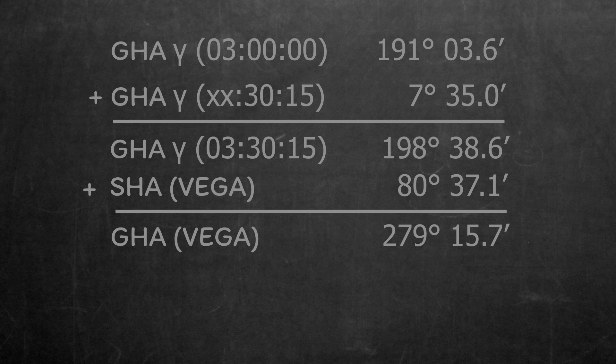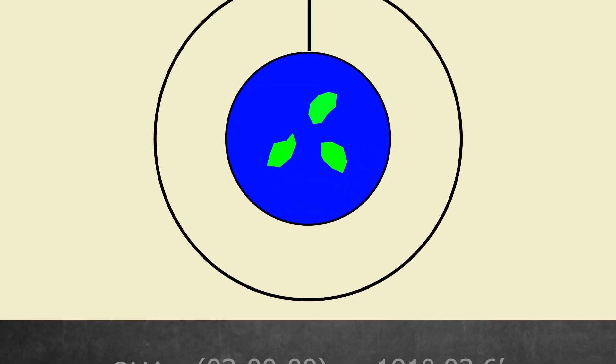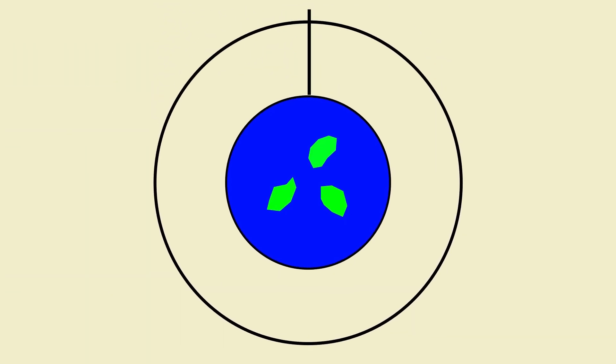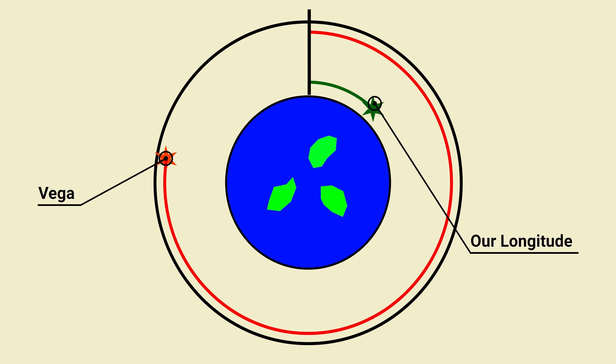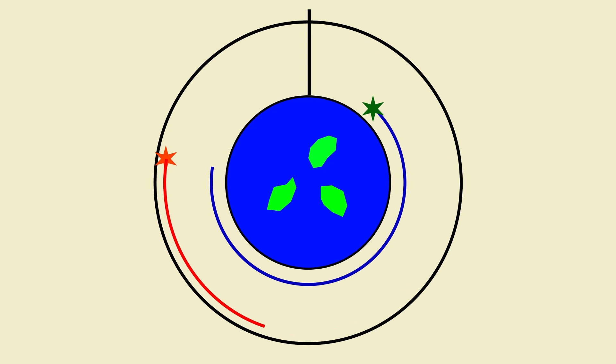The easiest way to explain this is to look at our diagram again. We can plot the Greenwich Hour Angle of our star, and also mark on our own position. Our longitude was 43 degrees 35.9 minutes west, which places us here, just over 43 degrees clockwise from Greenwich. Local Hour Angle is the angle between us and the star. As our longitude is west, we just subtract our longitude from the Greenwich Hour Angle of the star to find the angle between the 2.